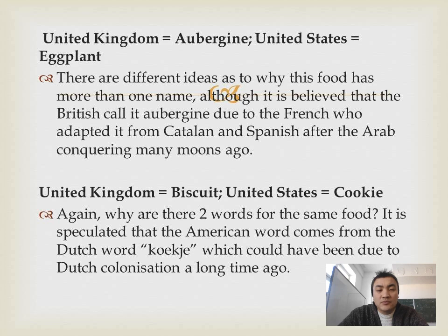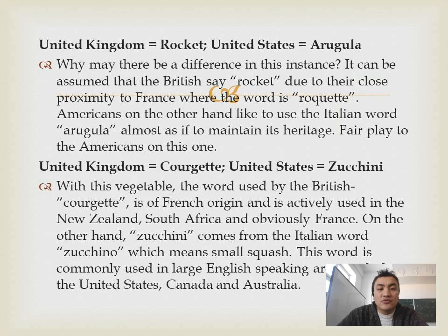United Kingdom: biscuit. United States: cookie. Again, why are there two words for the same food? It is speculated that the American word comes from the Dutch word 'cookie,' which could have been due to Dutch colonization a long time ago.